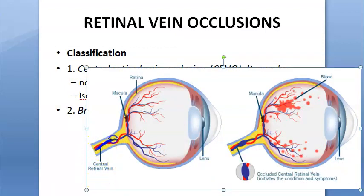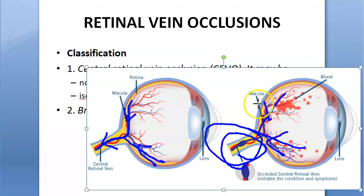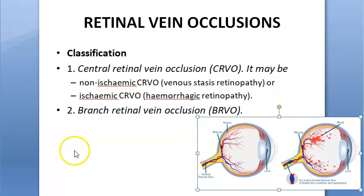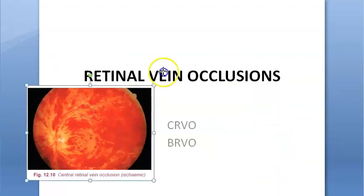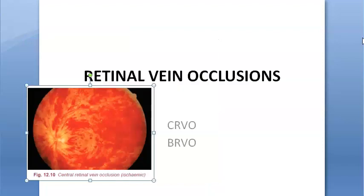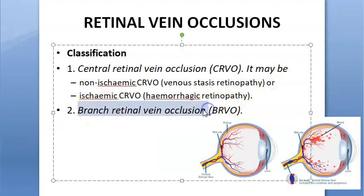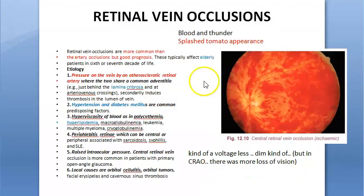The blood goes into the veins and the vein is supposed to drain out. When it gets occluded, it will not be able to drain. You can remember this image — it looks like a splashed tomato, so much blood is seen. Then you have branch retinal vein occlusion, where only a branch is getting occluded, but central is more important for the exam.